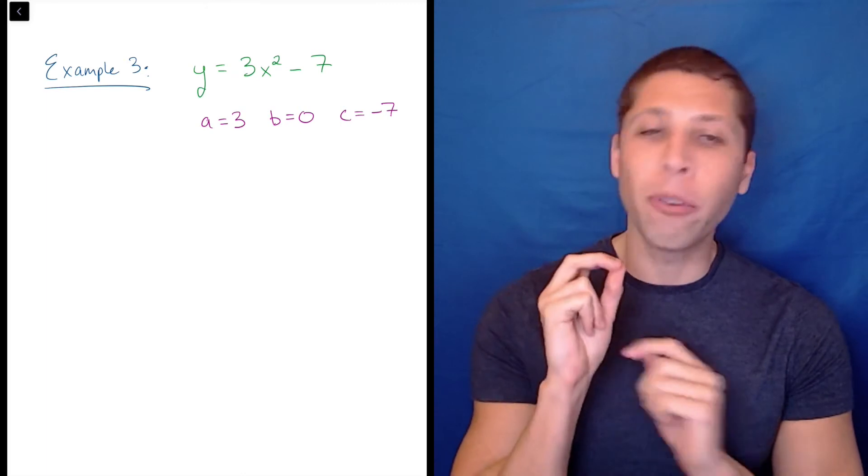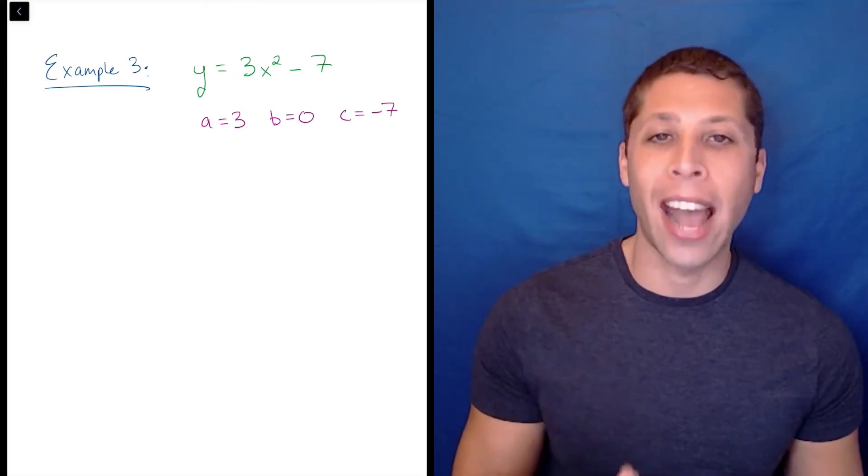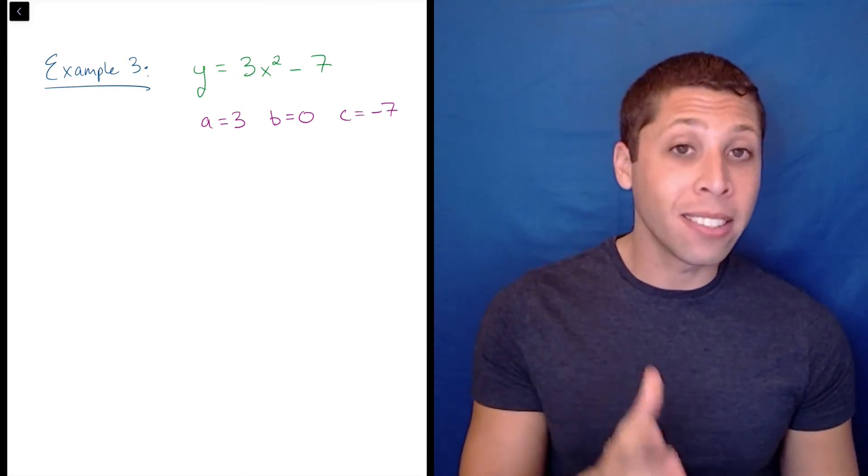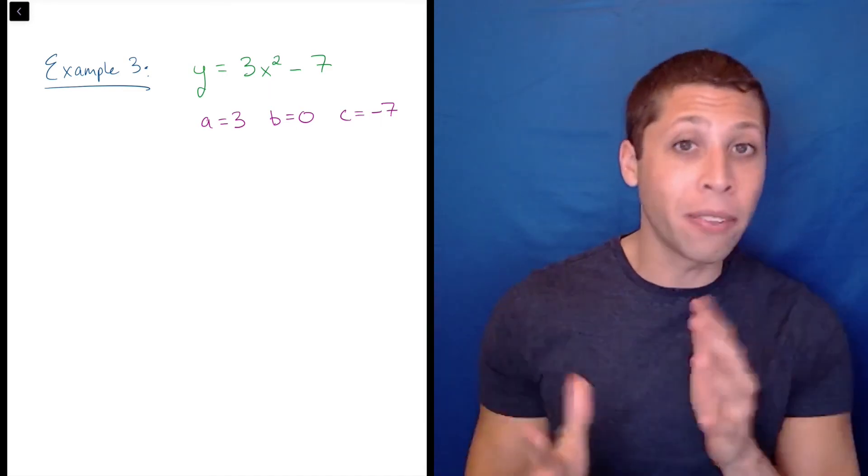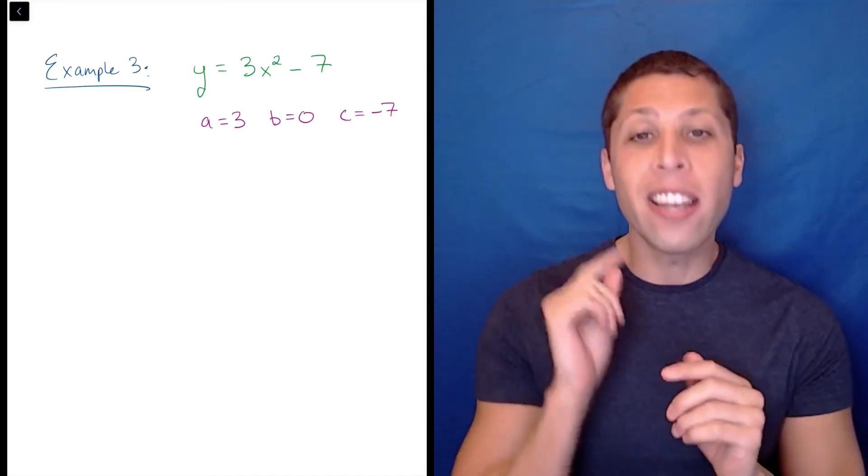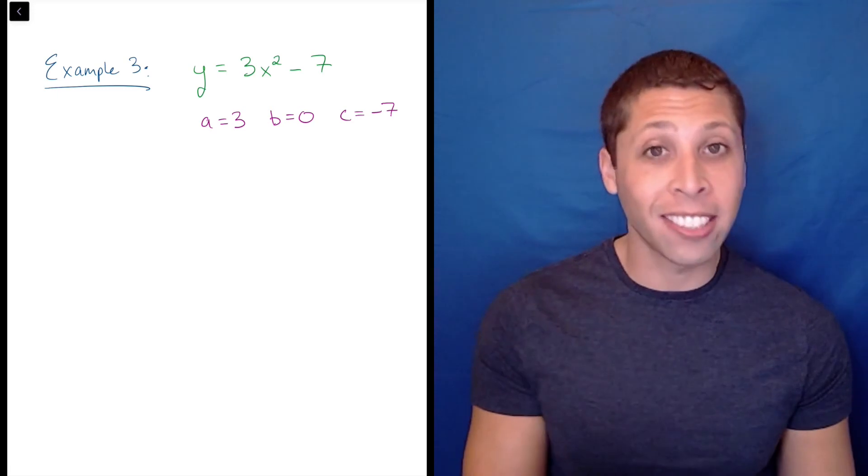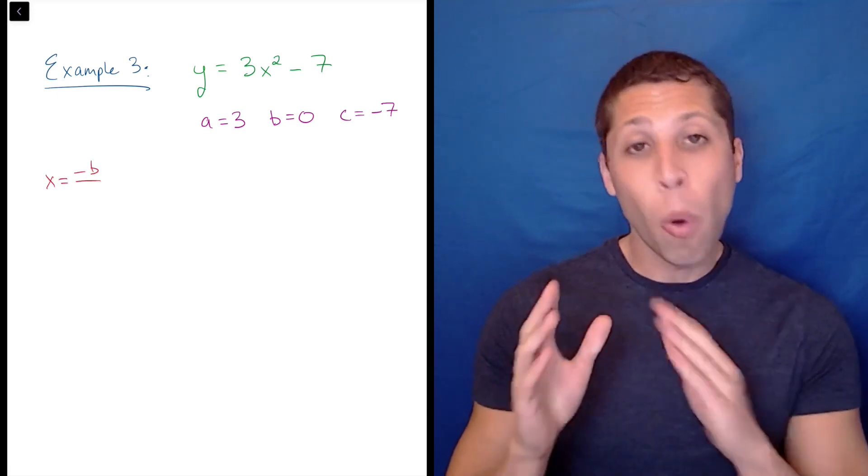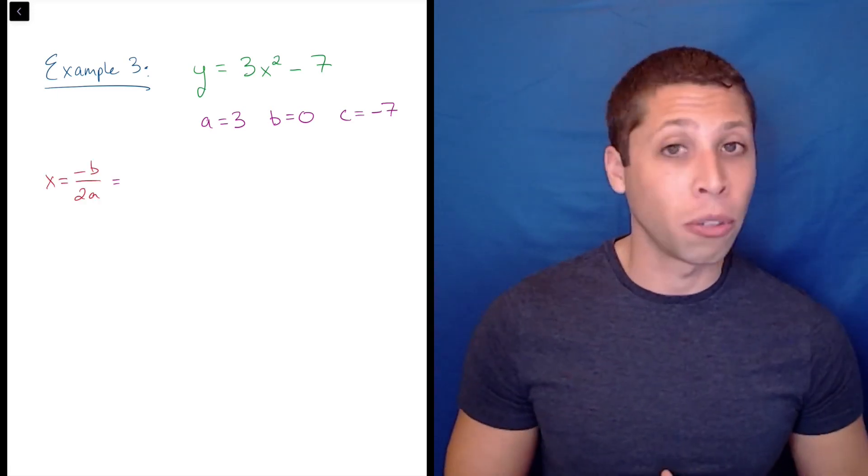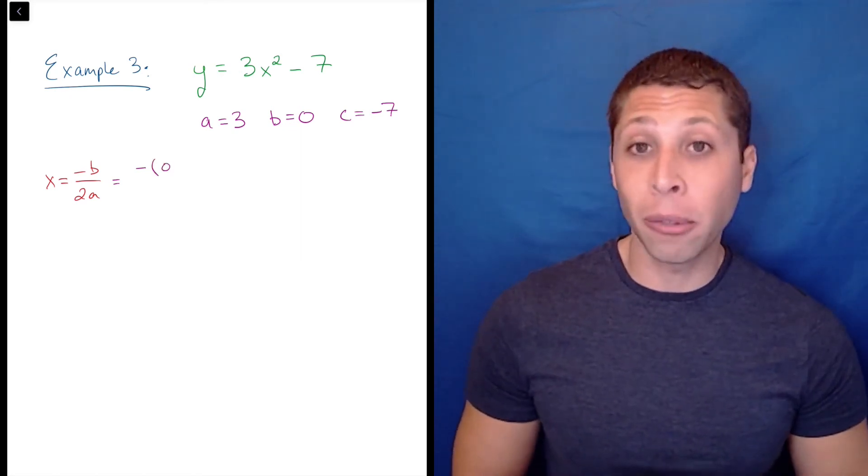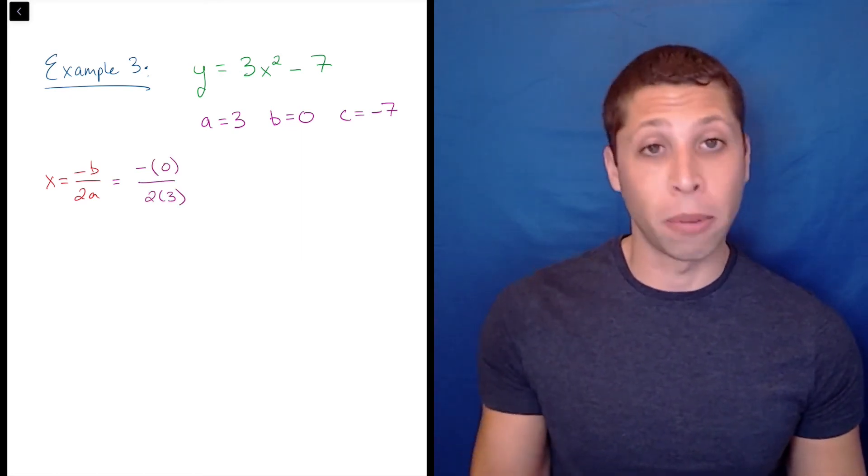Notice that even though negative 7 is the second term, it's not the value of b because there's no attached x. When you're finding a, b, and c, the order might be different, so pay attention to the number of attached x's instead. When we substitute into the axis of symmetry formula, we get negative 0 over 2 times 3, which simplifies to 0.